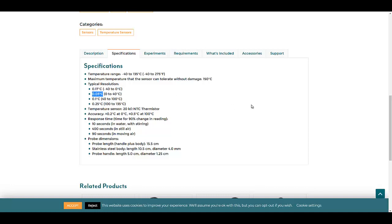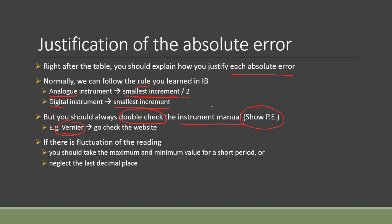Lastly, if there's any fluctuation in the reading—for example, when you do the electronic balance it's 12.34 but sometimes it changes to 12.37 or 12.32—what you can do is in your methodology say you would observe and take the maximum and minimum value for a short period, like five to ten seconds. In this case that would be 12.37 and 12.32 as maximum and minimum. Then you can use the half range method to find the absolute uncertainty in this case.